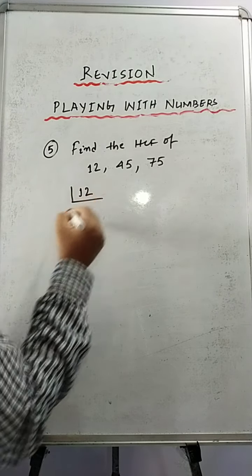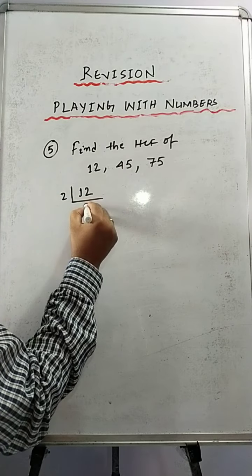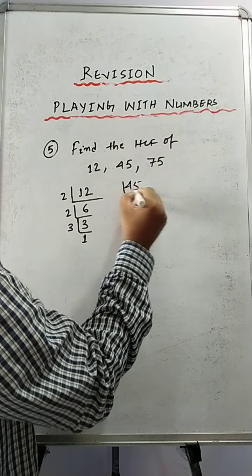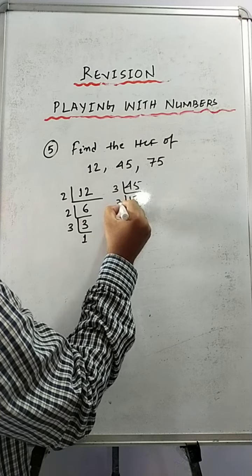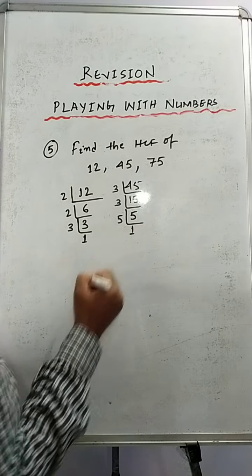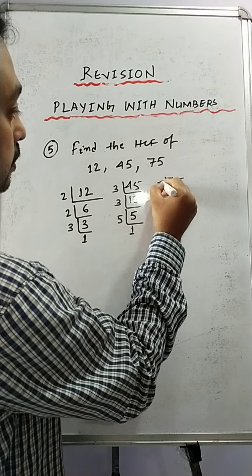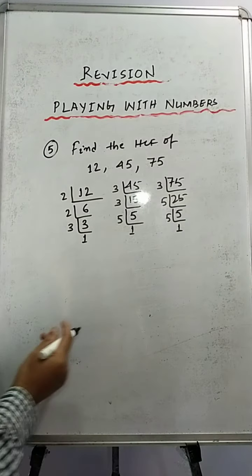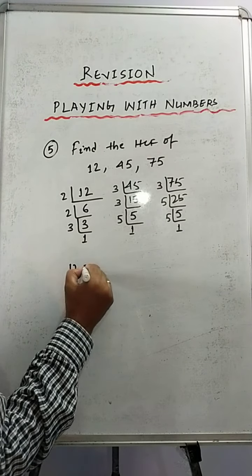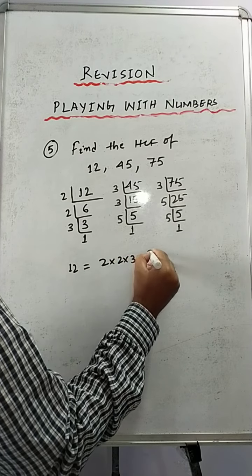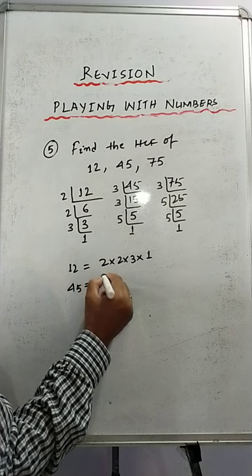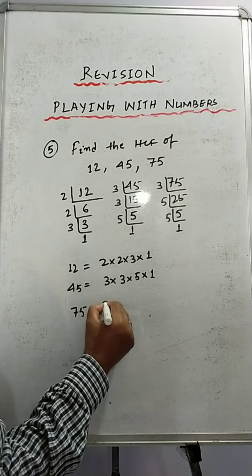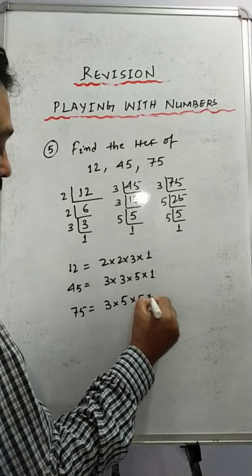For 12: 2 times 6, 2 times 3, 3 times 1. For 45: 3 times 15, 3 times 5, 5 times 1. For 75: 3 times 25, 5 times 5, 5 times 1. Now we will write all the prime factors: 12 equals 2 into 2 into 3 into 1. 45 equals 3 into 3 into 5 into 1. And 75 equals 3 into 5 into 5 into 1.